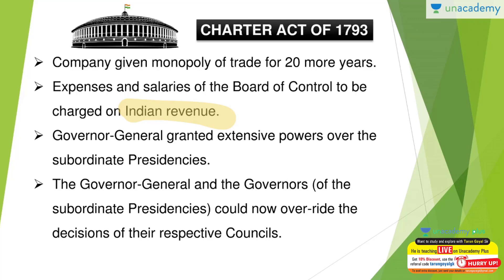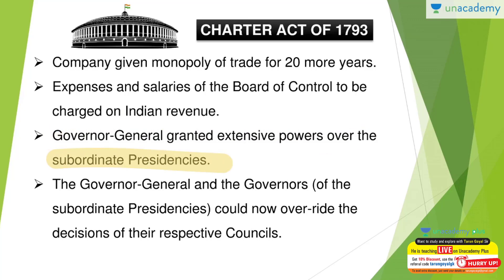Extensive powers were given to the Governor General over his subordinate presidencies. We had discussed this before — Bombay and Madras Presidencies were properly made subordinate to the Governor General of Bengal, who at this time was Lord Cornwallis. An additional point to remember: when the Governor General visited Bombay or Madras, he would supersede the authority of the Governors of Madras and Bombay — similar to the table of precedence you may have read in Indian Polity.